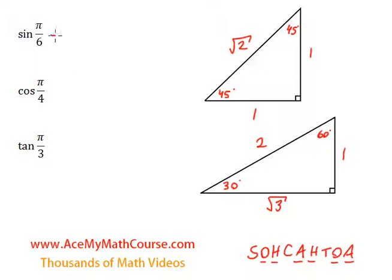So starting with sine of pi over 6, now I'm also going to assume that you remember how to convert degrees into radians and vice versa. 45 degrees is pi over 4, pi over 4 over here as well, 30 degrees is pi over 6, 60 degrees is pi over 3.